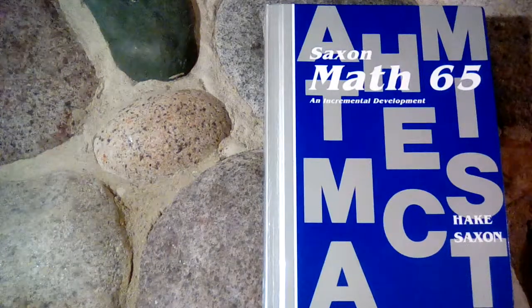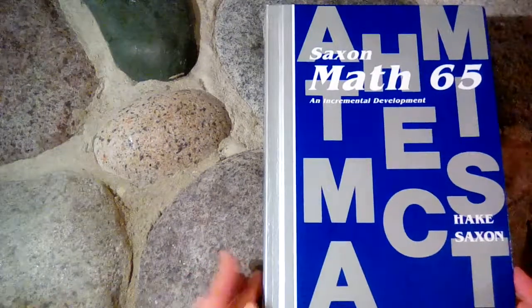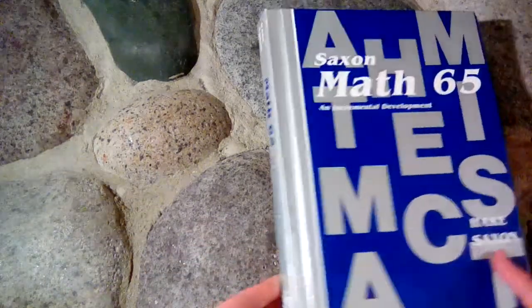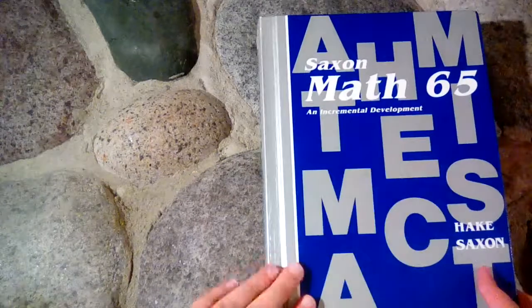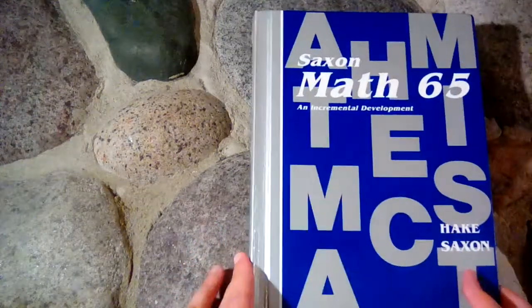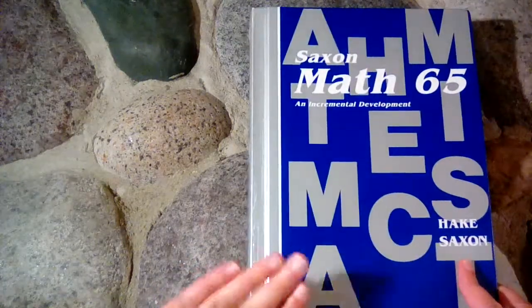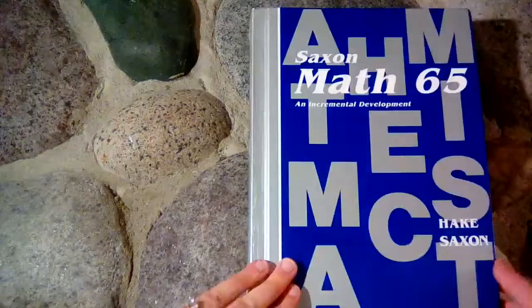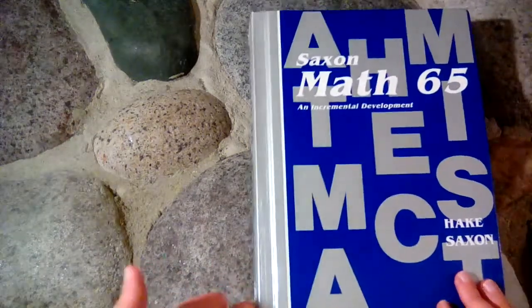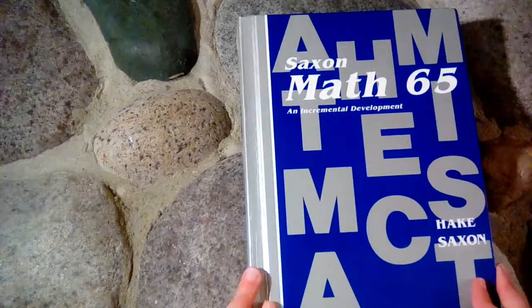The first, second, and I believe third editions are all hardcover, and the new fourth editions are paperback. A lot of people enjoy getting the older editions of Saxon because they're hardcover, and I think there's even more lessons in the older ones. I think they combine more lessons in the fourth edition.